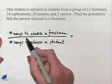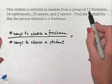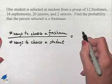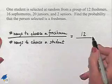So we notice that the number of ways to choose a freshman would be to choose one from the 12 freshmen that are in this group. So we're going to have 12 in our numerator.